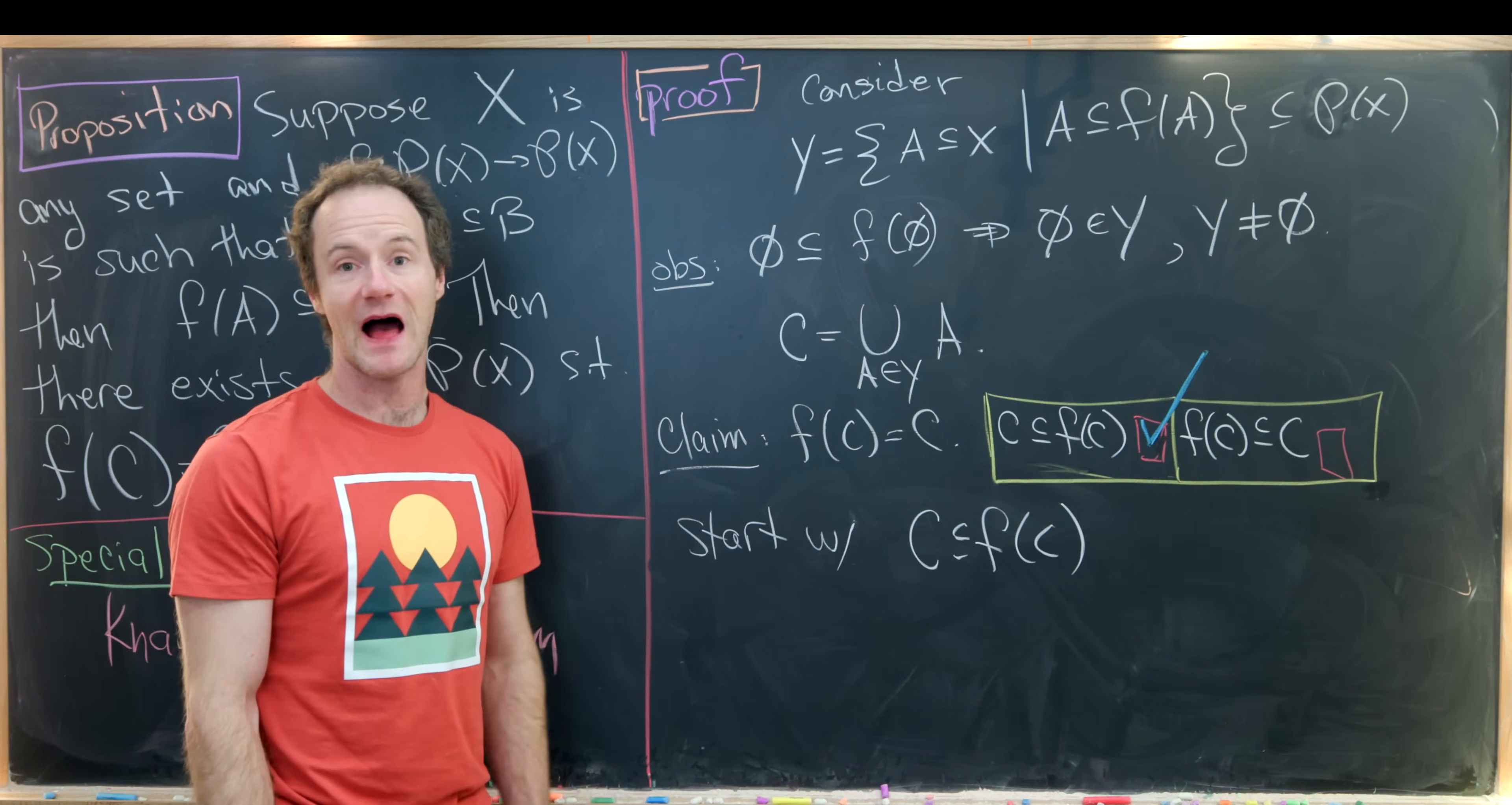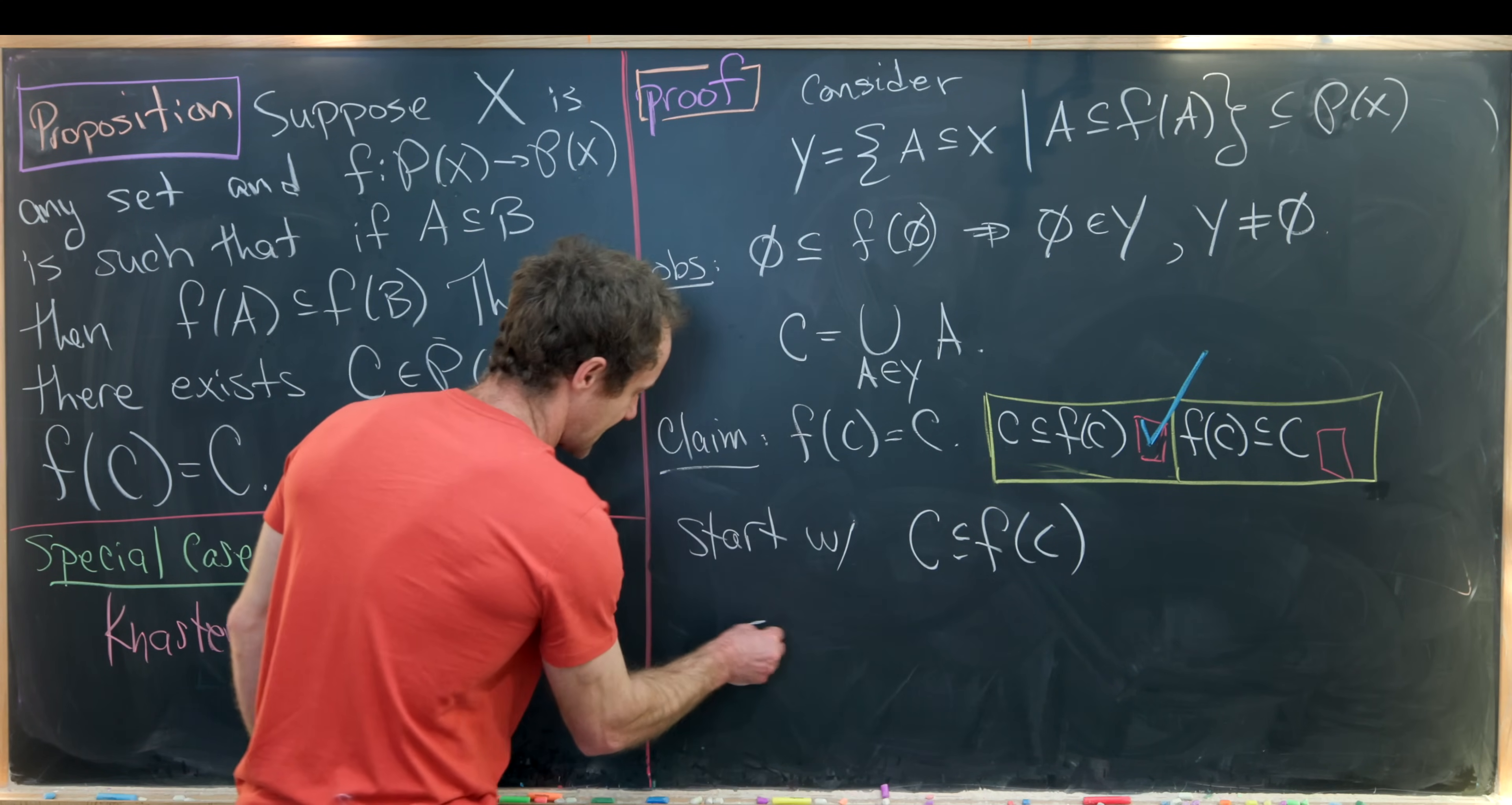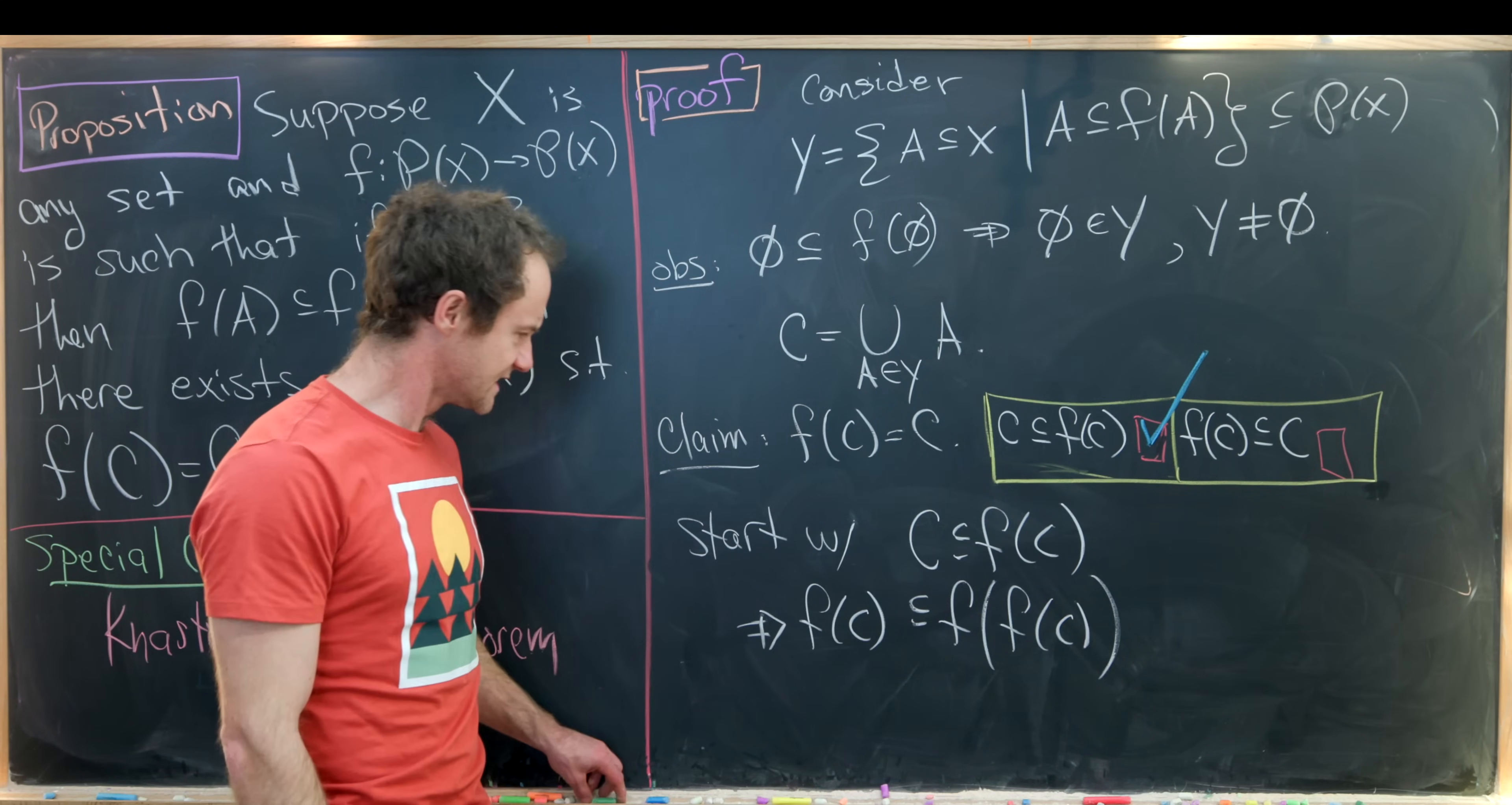And now let's apply f to both sides here. And notice that the containment will still be satisfied by our increasing condition. So let's write that down. That tells us that f of c is a subset of f of f of c. Again that's by our increasing property over here. Now let's see what we have.